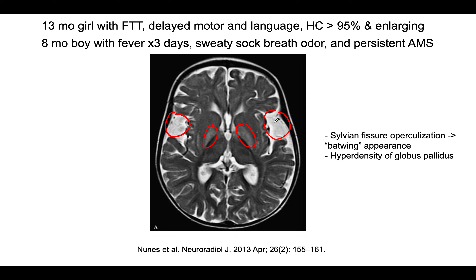Another example in a more acute setting would be an 8-month-old boy with fever for 3 days, sweaty sock breath odor, and persistent altered mental status. This unique breath odor is particularly notable in patients who have organic acidemias and disorders of amino acid metabolism.